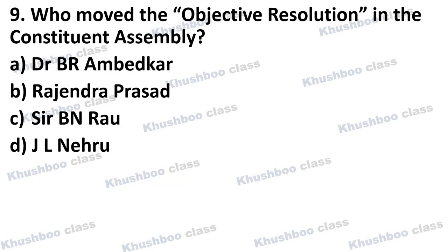Next question: Who moved the Objective Resolution in the Constituent Assembly? Option A: Dr. B.R. Ambedkar, Option B: Rajendra Prasad, Option C: Sir B.N. Rao, Option D: Jawaharlal Nehru. The answer is Option D, Jawaharlal Nehru. Wherever you are asked who moved the Objective Resolution in the Constituent Assembly, the answer is Jawaharlal Nehru.